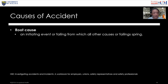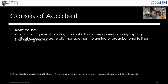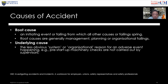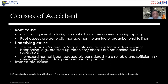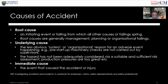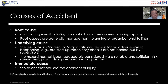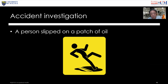Root causes are generally management, planning, and organisational failures — the initiating events from which all other causes spring. Underlying causes are less obvious systemic or organisational reasons for an adverse event, for example: start-up machinery checks not carried out by supervision, hazards not adequately assessed in a risk assessment, or production pressure being too great. The immediate cause is the event that directly harms the worker.